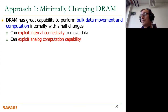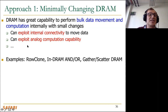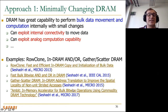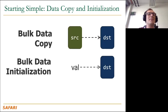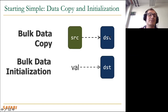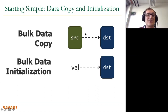We're going to start simple in this lecture — motivated from real applications. The simplest thing you can do inside memory is initialization of data, and slightly more complex is block data copy. Block data copy means copying a 4 KB page to another 4 KB location, or a 1 GB region to another 1 GB location. If you do that copy through the processor, it's going to be expensive. Block data initialization means, for example, initializing a 1 TB database in memory to all zeros — that takes time.